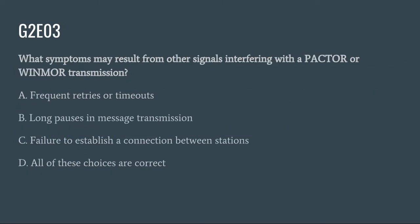G2E03: What symptoms may result from other signals interfering with a PACTOR or Winmore transmission? A. Frequent retries or timeouts. B. Long pauses in message transmission. C. Failure to establish a connection between stations. Or D. All of these choices are correct. The correct answer is D: all of these choices are correct.